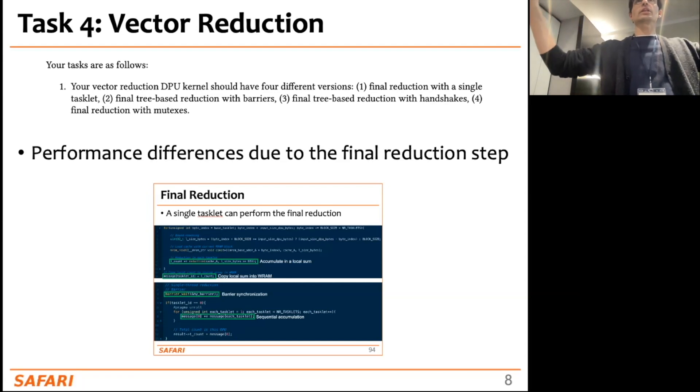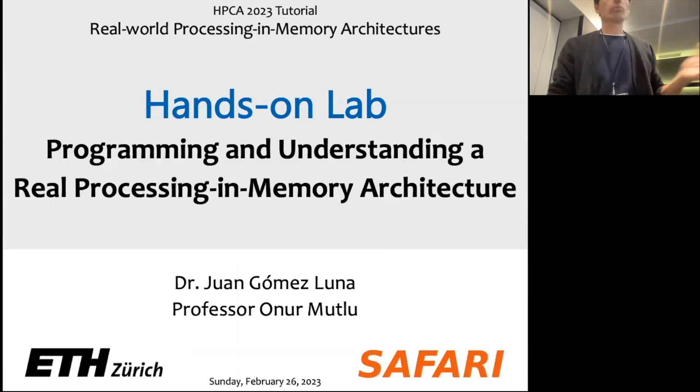For the final reduction, after you have computed a local sum in each of the tasklets, you need to reduce these local sums, and there are different ways of doing it. The most straightforward one is to synchronize using a barrier and then use a single tasklet to perform the final reduction. But you can also do a tree-based approach using barriers, handshakes, or you can also use mutexes.